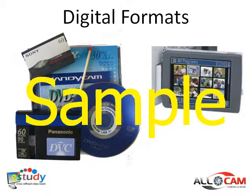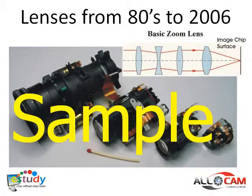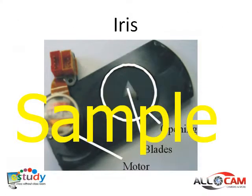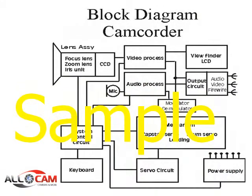I will talk about media which requires mechanical disc or tape drive, solid state removable media, the advantages of a good lens, explanation of the iris inside the lens which controls the aperture, the details of the three chip setup, and a simplified block diagram of a camcorder.